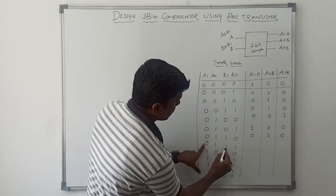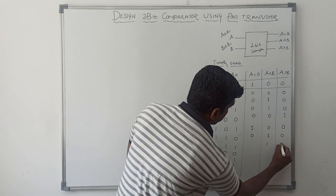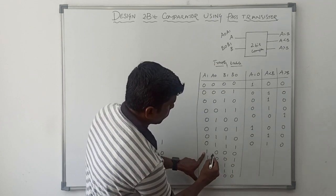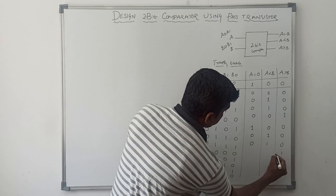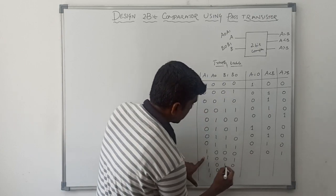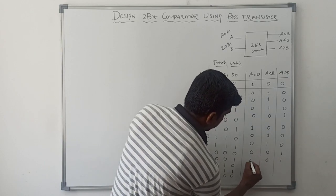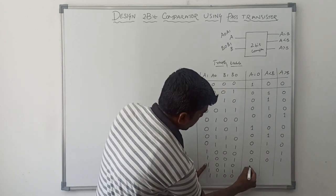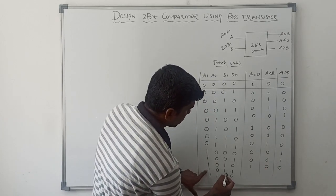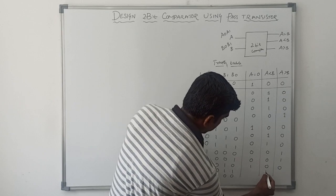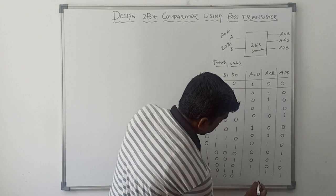Then A value is 0,1 and B value is 1,1, so A is less than B. Next, A value is 1,0 and B value is 0,0, so A is greater than B. Then 1,0 and 0,1 — A value is greater than B. Then A is 1,0 and B is 1,0 — A equal to B, so A value is equal to B. Then A is 1,0 and B is 1,1 — A value is less than B. Then 1,1 and 0,0 — A value is greater than B.